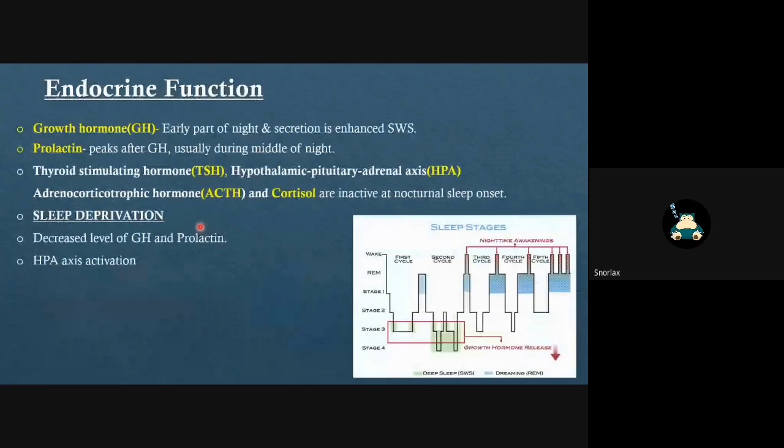Many hormones are regulated during the sleep-wake cycle. Growth hormone is released in the early part of the night and is enhanced by slow-wave sleep. Whereas prolactin peaks after growth hormone and is usually during the middle of night. Thyroid-stimulating hormone, HPA axis, adrenocorticotropic hormone, and cortisol are inactive at nocturnal sleep onset. If we are sleep deprived, there is a decreased level of growth hormone and prolactin, and HPA axis is activated.